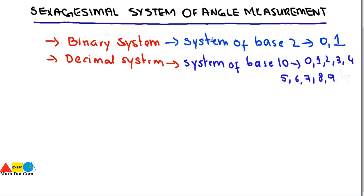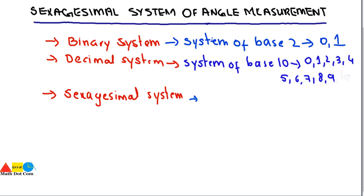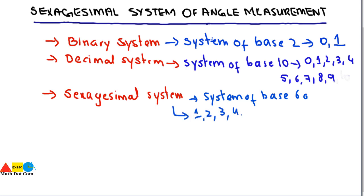Besides these, another system is the sexagesimal system. Although it is not used nowadays, this system is important. It is also known as the Babylonian system, as it was used by Babylonians to represent numbers. This system is basically a system of base 60. The numbers involved in this system are 1, 2, 3, 4, 5, 6, 10, 12, 13, 20, and 30.